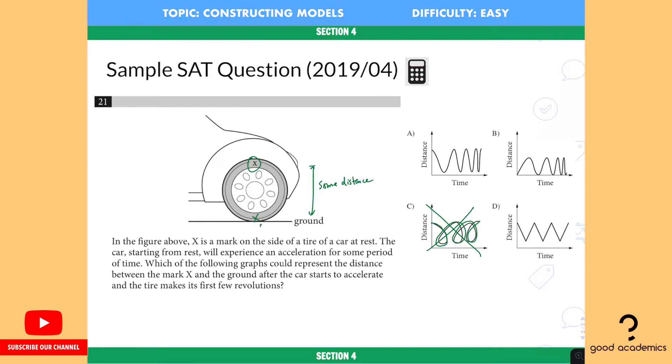Then there's one graph that we can read out right away, which is choice B. Because choice B starts at zero and the X is marked way above the ground. It's at the top of the tire. So it cannot start at zero. So that's why B is out.